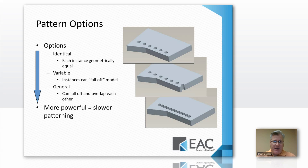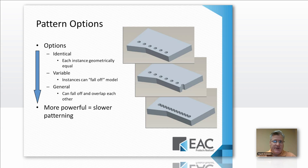When you go from identical to variable to general, it's slower regeneration because Creo is doing a little more thinking. In an identical pattern, it's really saying: okay, this is the geometry I've got, and I'm just going to duplicate that exact geometry — not going to think about it, just going to do it. In a general pattern, it's actually regenerating each instance and doing a little sanity test as it goes along.